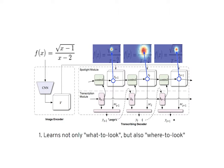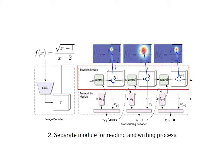First, the Spotlight mechanism lets the model know not only what to look, but also where to look. Second, a separate Spotlight module is devoted to learning how to read following the image structure, avoiding the confusion between reading and writing process.